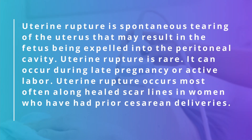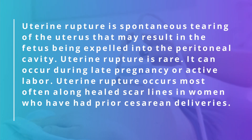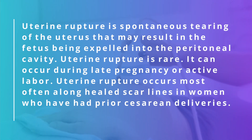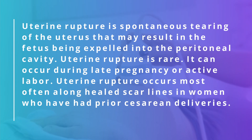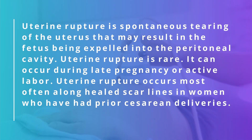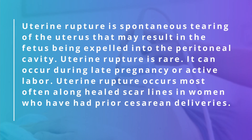In a nutshell, uterine rupture is a portentous tearing of the uterus that may result in the contents being expelled into the peritoneal cavity. Uterine rupture is rare in reality. It can occur during late pregnancy or active labor. Uterine rupture occurs most often along scar lines in women who have had prior cesarean section deliveries.